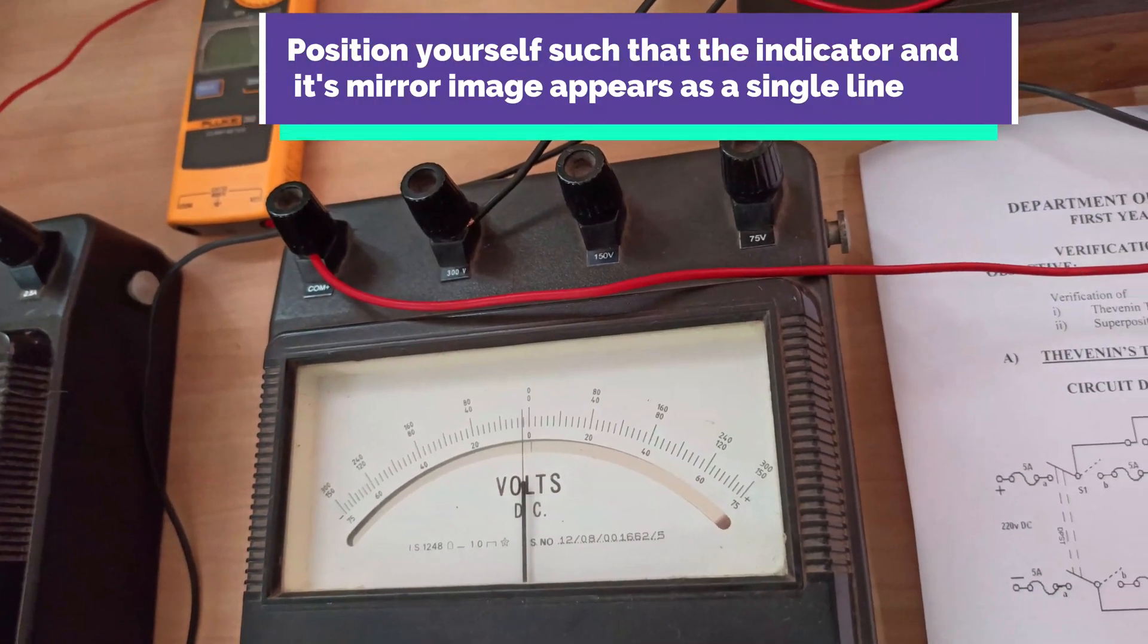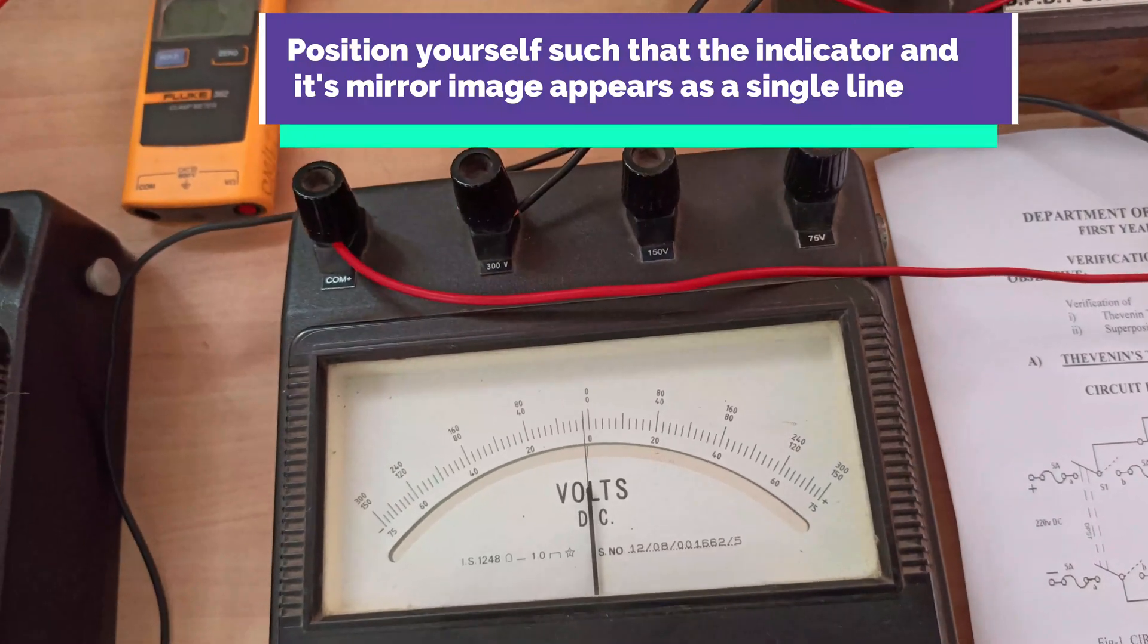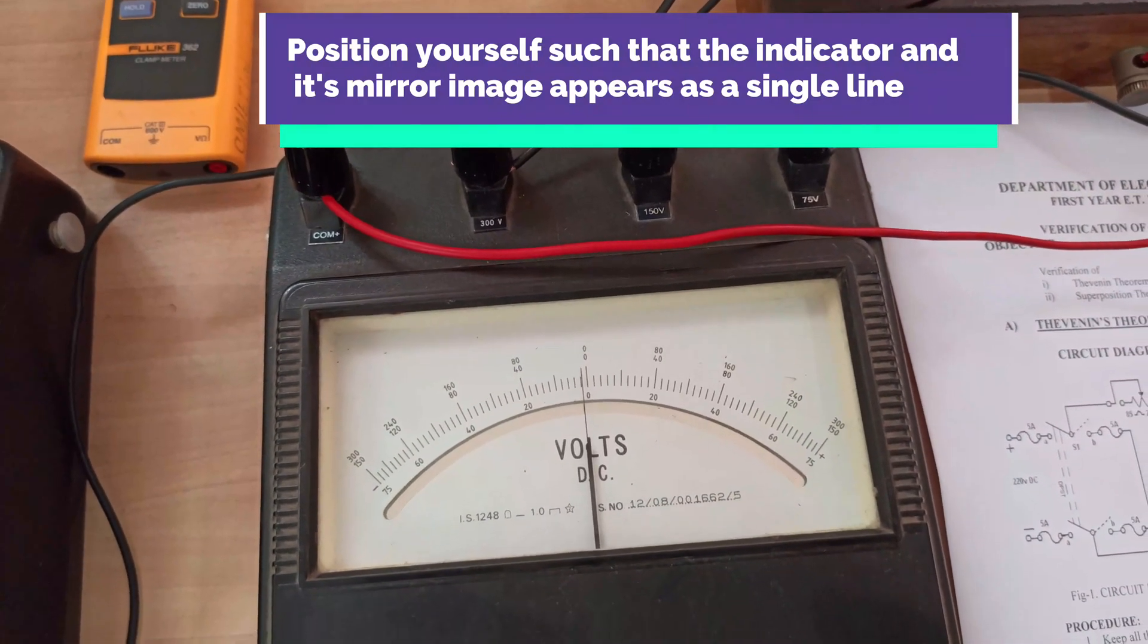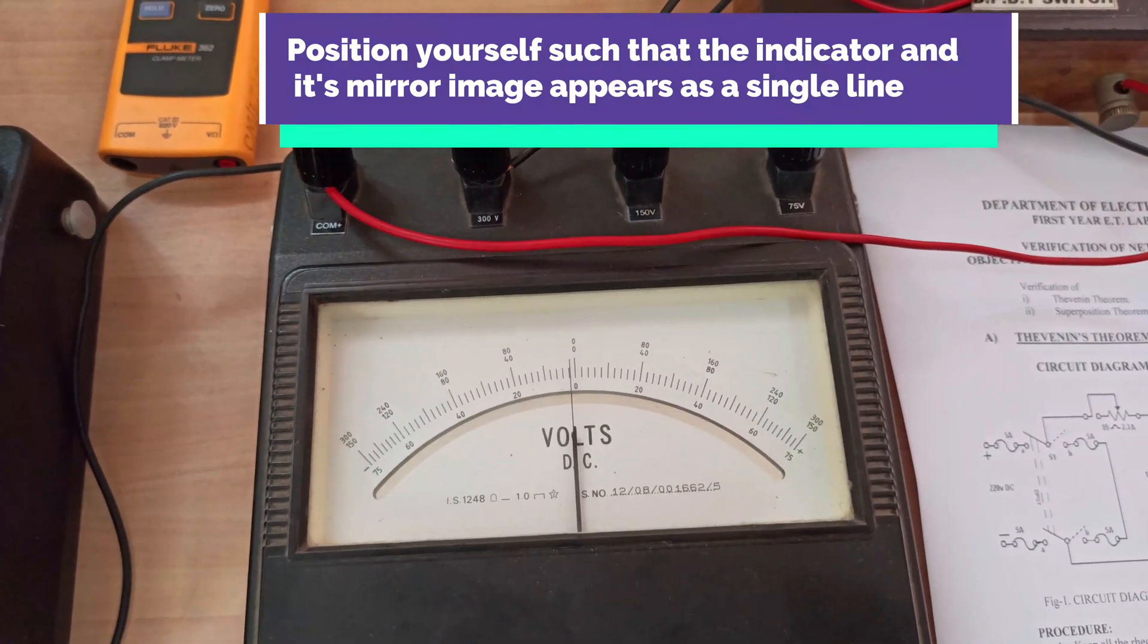You have to position yourself such a way that these two lines are aligned together and you can see them as a single line. That is the correct position to take the readings.